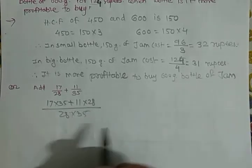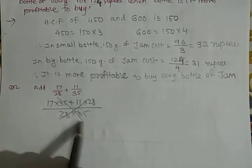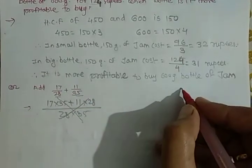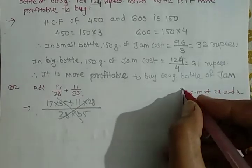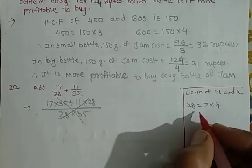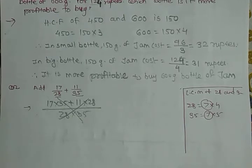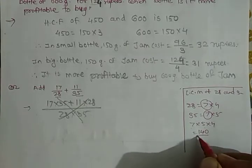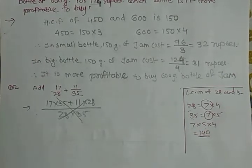This is too big a method. Instead of this we use LCM here. First find out the LCM of 28 and 35. 28 equals 7 into 4, and 35 equals 7 into 5. LCM is 7 into 5 into 4, that's 140.